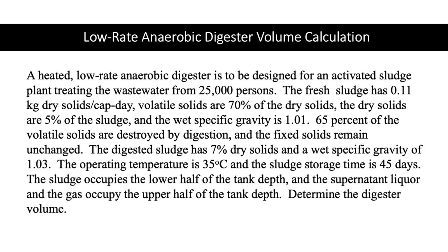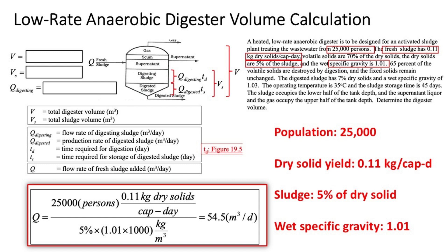To find the total digester volume V, we first find the total sludge volume Vs. Typically, the digester volume should be twice the total sludge volume, providing sufficient space for supernatant, scum, and gas. Calculating the total sludge volume requires the flow rate of fresh sludge added to the digester, which depends on service population, dry solid yield, fraction of dry solids in the sludge, and sludge density — all identifiable from the problem statement.